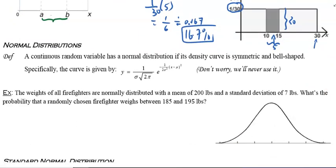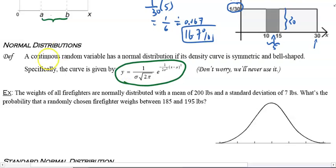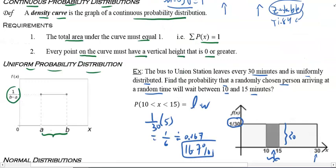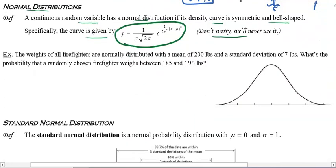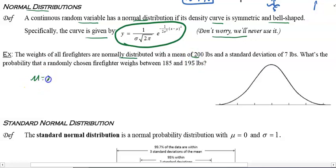A normal distribution — don't be alarmed, you're not responsible for the formula — is when a continuous random variable has a normal distribution. It's a bell-shaped curve, and its density curve is symmetric and bell-shaped. For example: the weights of all firefighters are normally distributed with a mean of 200 pounds and a standard deviation of 7 pounds.